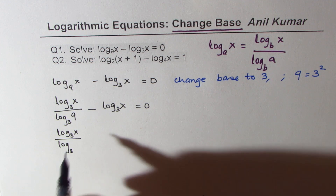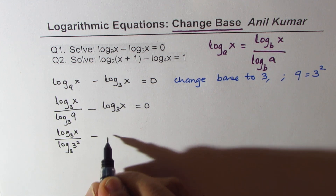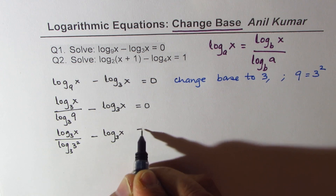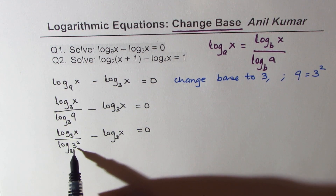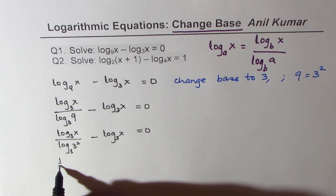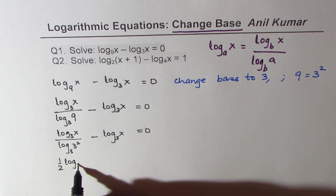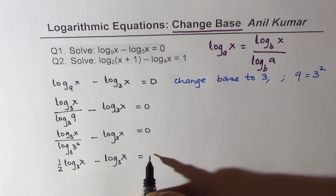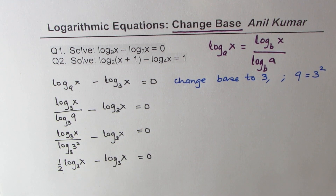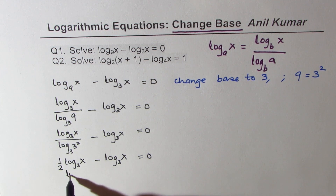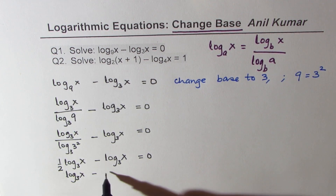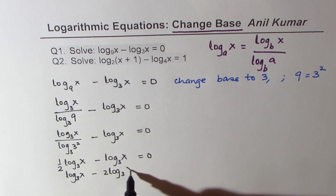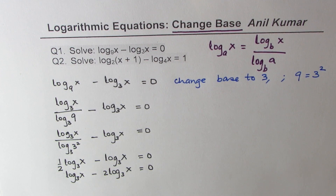Minus log base three of x equals zero. The denominator of the first term can be written as log base three of three squared, which equals two. So we could write this as one-half of log base three of x minus log base three of x equals zero. We then multiply everything by two to avoid fractions: log base three of x minus two times log base three of x equals zero.